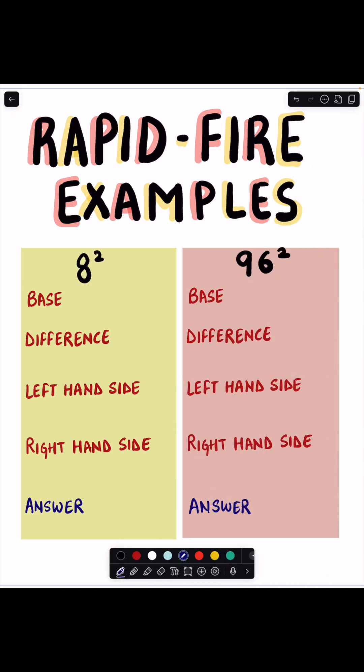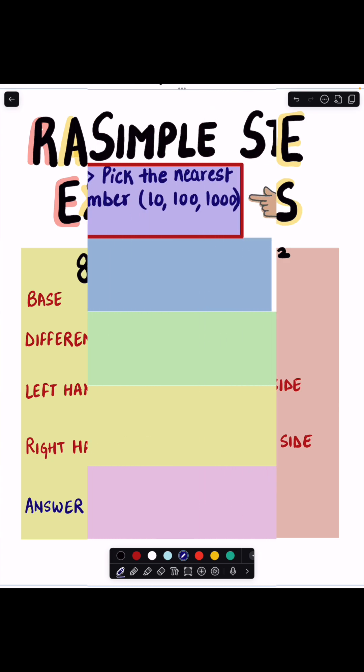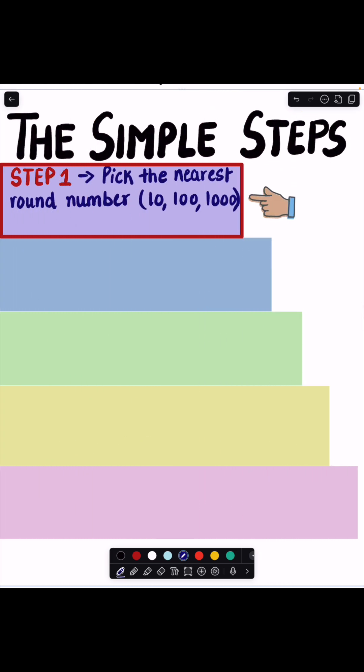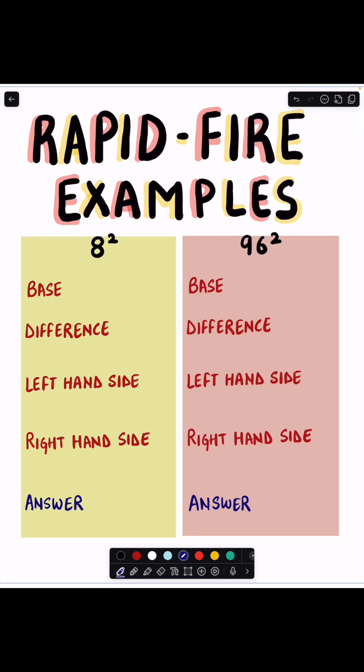Let's use this trick on our rapid fire examples step by step. Step 1: Pick the nearest round number. It can be 10, 100, 1000, etc. Our first example is 8 squared and we're gonna pick the nearest round number which is 10 in this case.